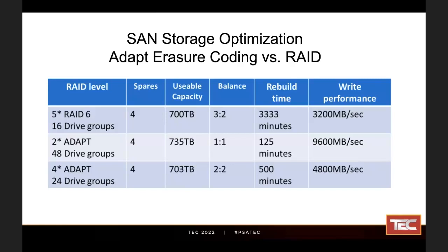If you compare that to what I can do by breaking that into either two or four erasure-coded arrays with the same number of spares, you can see that the rebuild time drops significantly. If I created two ADAPT arrays or two erasure-coded arrays of 48 drives apiece, that rebuild time for a failed drive can drop from 3,333 minutes all the way down to 125 minutes. Subsequently, the write performance now jumps up to 9,600 megabits per second at what it can handle.